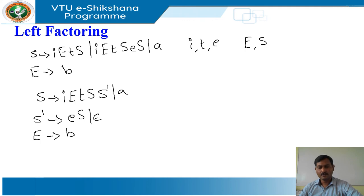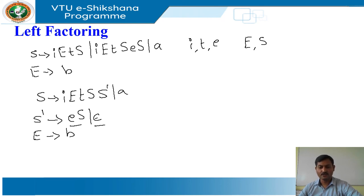Thus, we may expand S to i E t S S' on input i, and wait until i E t S has been seen to decide whether to expand S' to e S or epsilon. Of course, these grammars are both ambiguous, and on certain input it will not be clear which alternative for S' should be chosen.